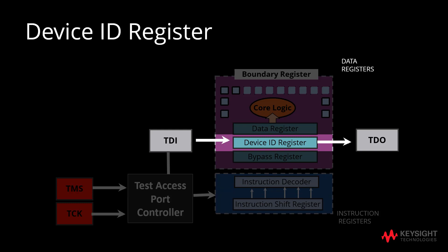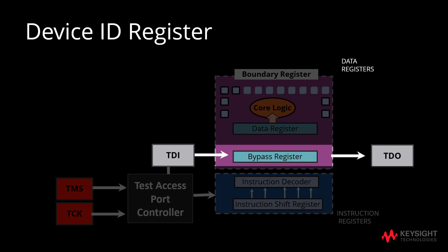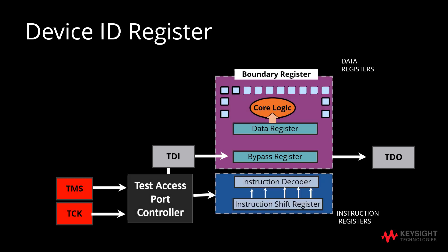As shown, the device ID register is seen as the default register pointed by both TDI and TDO. When the device ID register is not present in the device, the next register pointed by both TDI and TDO will be the bypass register. On top of that, integrity test will also check the length of both the chain and instruction register.